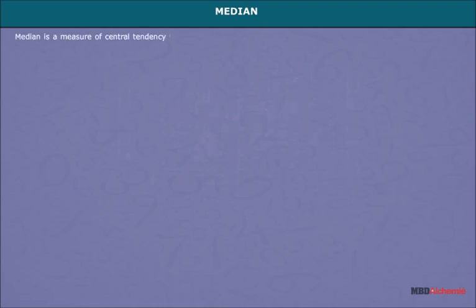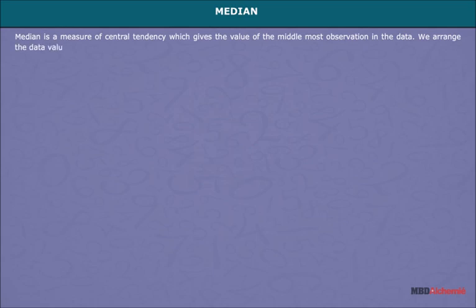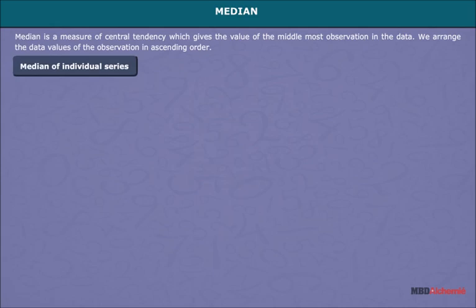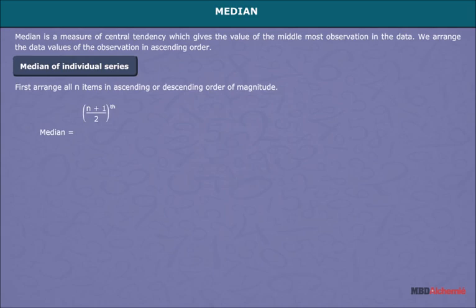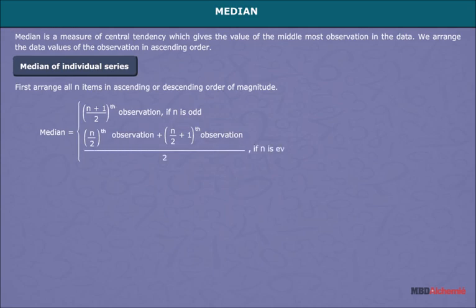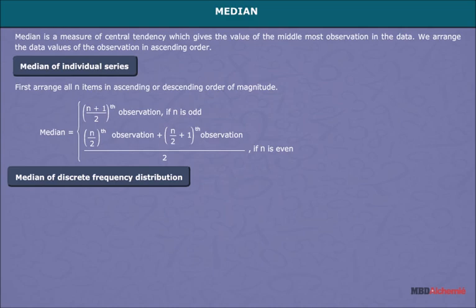Median is a measure of central tendency which gives the value of the middlemost observation in the data. We arrange the data values of the observation in ascending order. For median of individual series, first arrange all n items in ascending or descending order of magnitude. Then median is equal to the (n+1)/2 th observation if n is odd, or the average of the (n/2)th and (n/2 + 1)th observations if n is even.